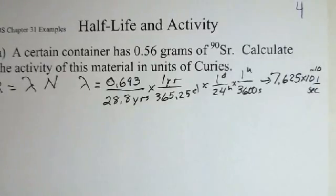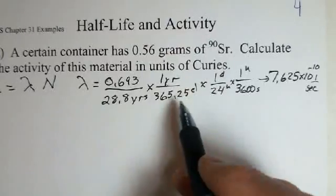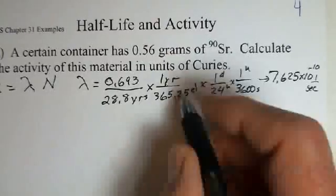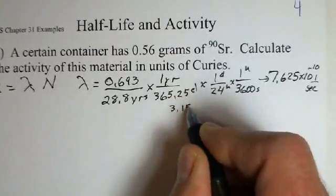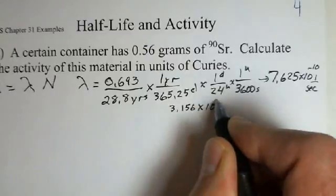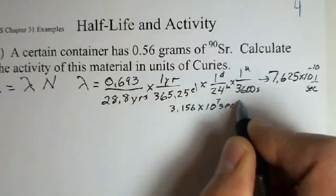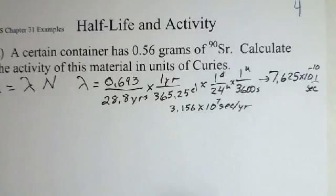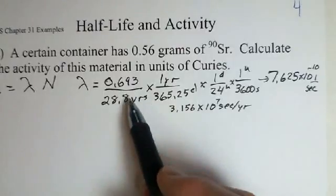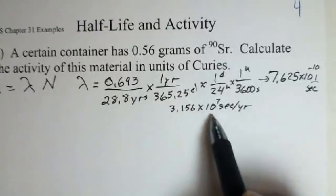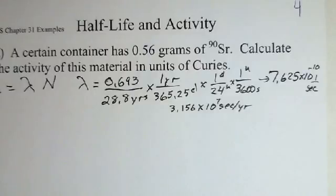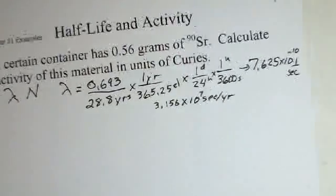There's another option here. There's 3.156 times 10 to the seventh seconds in a year. So we could have divided, do this division and then divide by here, and we'd get pretty much that same number.